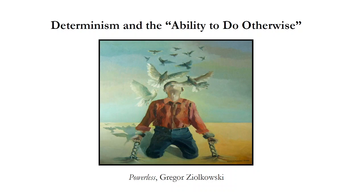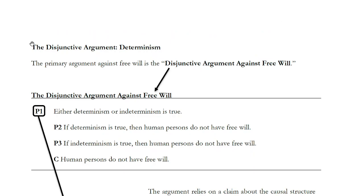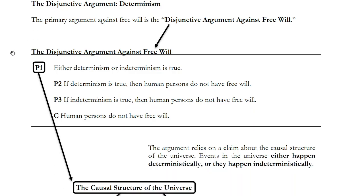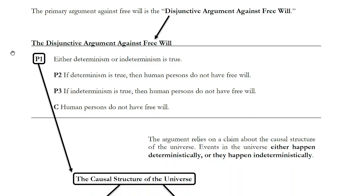Now to determine whether that threat is actually real, we have to look at what are the arguments against free will. The most important argument — the main argument against free will — is what I'm going to call the disjunctive argument against free will. And we're going to look at this argument in the next two videos.